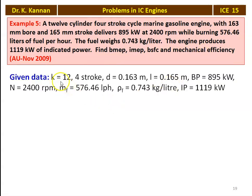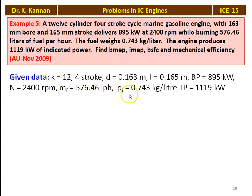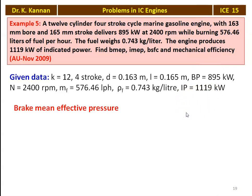Writing down the given data: number of cylinders K = 12, 4-stroke cycle engine, diameter = 0.163 m, stroke length = 0.165 m, brake power = 895 kW, speed = 2400 RPM, mass of fuel = 576.4 liters per hour with density 0.743 kg/liter, indicated power = 1119 kW. First, we calculate the brake mean effective pressure.